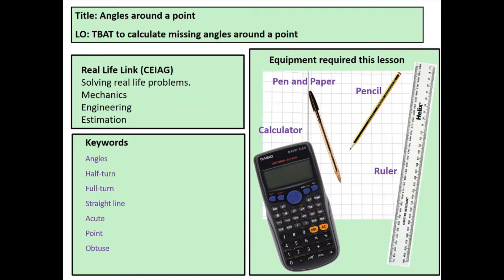As for the keywords you'll look at things like degrees, angles, acute, obtuse, and the required equipment is written on the screen as follows.